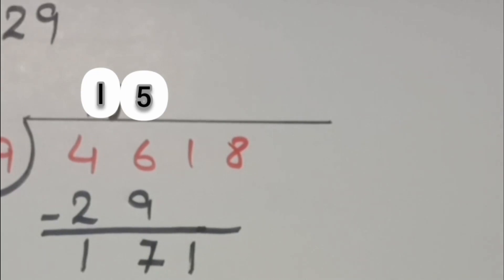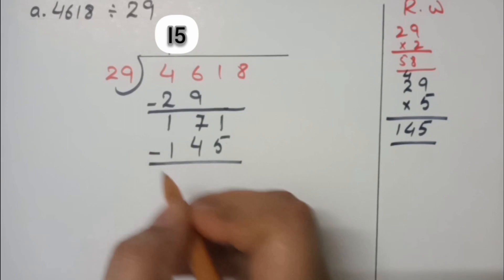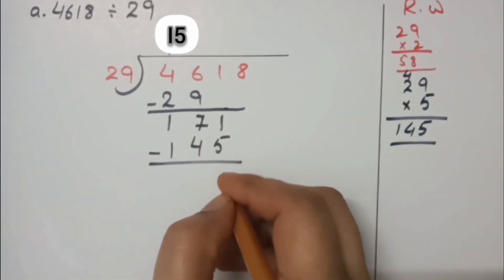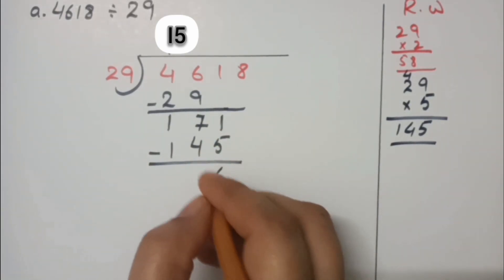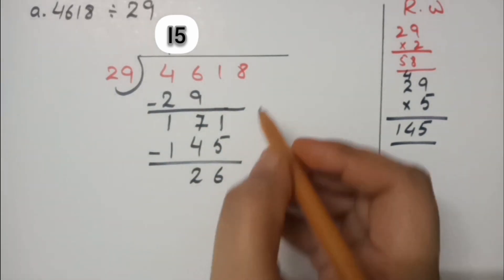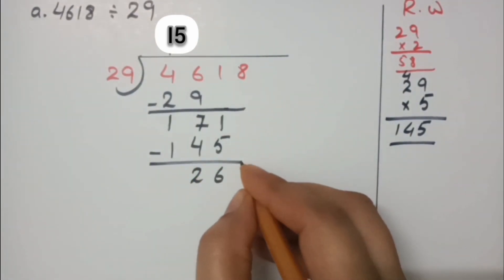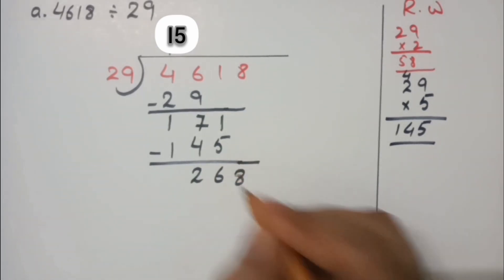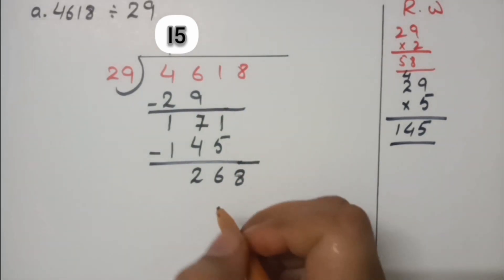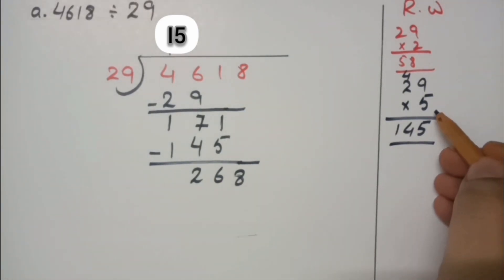So 29 fives are 145. Now we do the subtraction: 11 minus 5 is 6, then 6 minus 4 is 2, then 1 minus 1 is 0. The result is 26. The next digit remaining is 8, so we copy down 8 here. It now becomes 268.